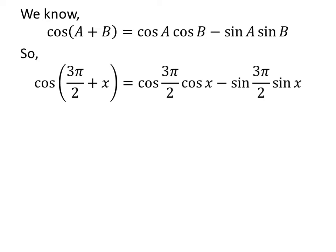So, cosine of 3 times pi upon 2 plus x is equal to cosine of 3 times pi upon 2 times cosine of x minus sine of 3 times pi upon 2 times sine of x.